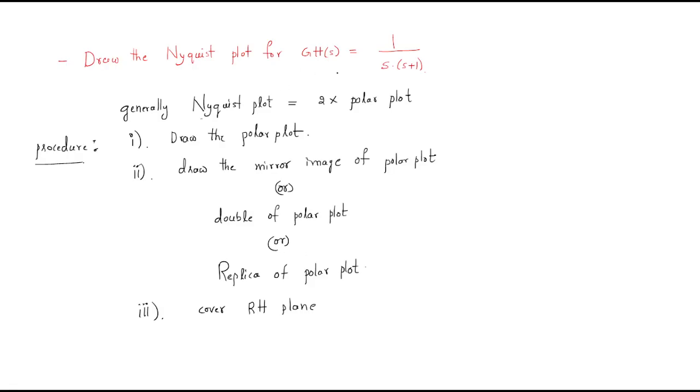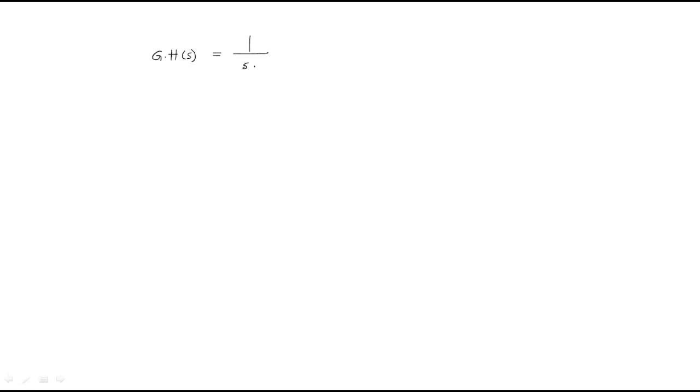Now for the given problem: GH(s) = 1 / [s(s+1)]. In order to draw the polar plot, we take the s-plane. The s-plane has an x-axis and a y-axis.